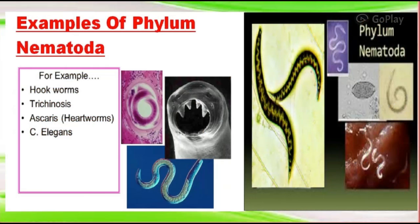These are the representative members of this phylum. Examples include hookworm, Ascaris, Caenorhabditis elegans, and heartworms.